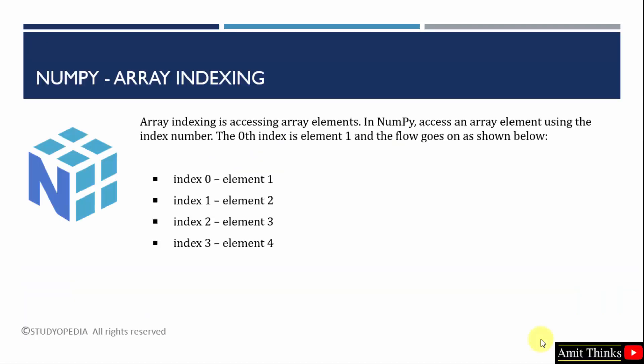Array indexing basically includes accessing array elements. So if you are creating 0 dimensional, 1 dimensional, 2 or 3 dimensional arrays, you can easily perform indexing — that is, access the array elements. Like any other programming language, the 0th index is element 1, the first index is element 2, and the flow goes on in an array, and the same applies here.